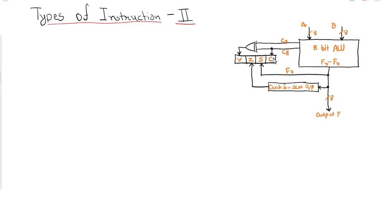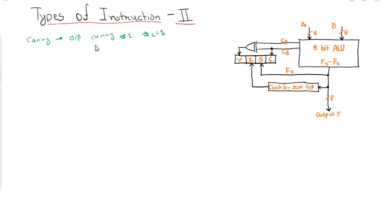The first status bit is C, which represents the carry. If the addition of two numbers results in a value larger than the bit size — for example, if we have two 8-bit registers and get a 9-bit answer — then the 9th bit will be stored in the carry. If the output carry is 1, the carry flag will be set to 1; if 0, it will be set to 0.